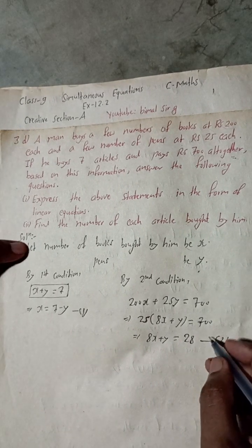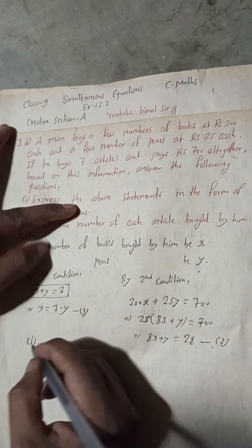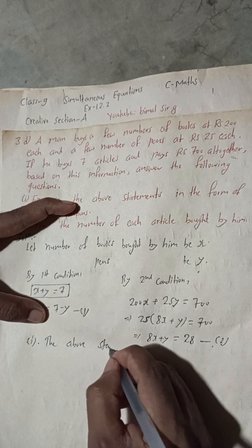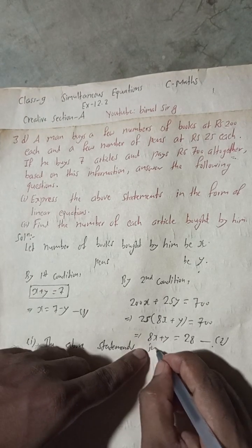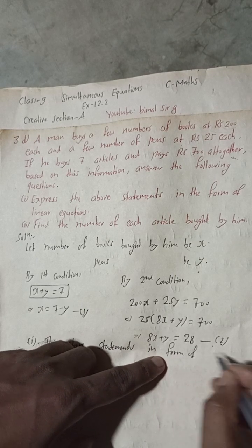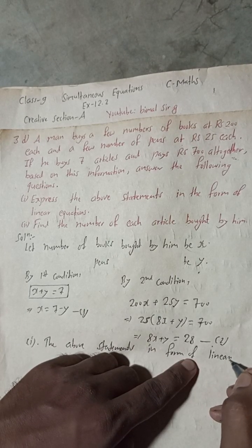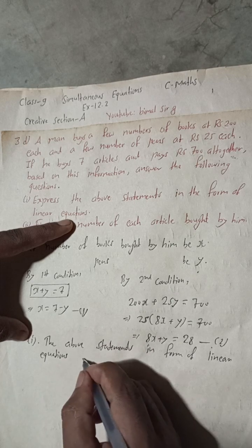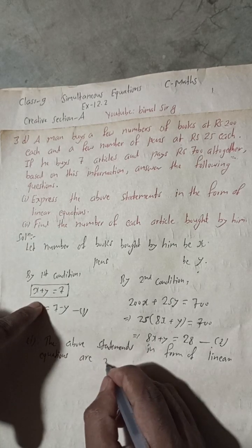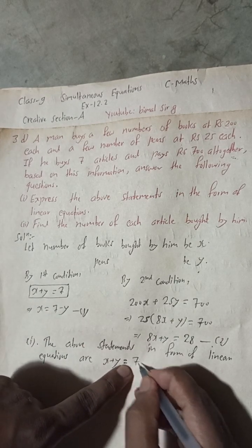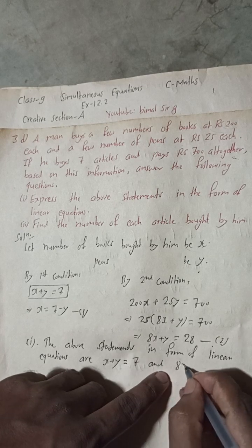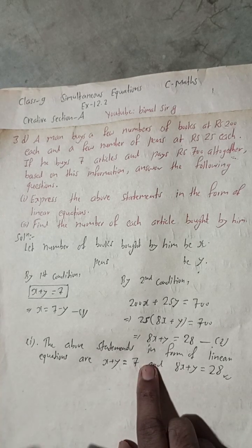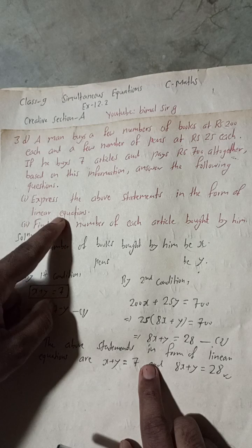Therefore, for part 1 — the above statements in the form of linear equations are: x plus y is equal to 7, and 8x plus y is equal to 28. These are the two required equations in linear form.